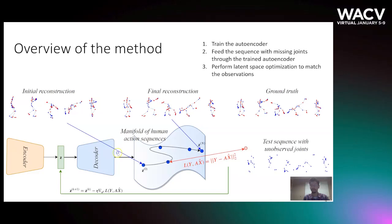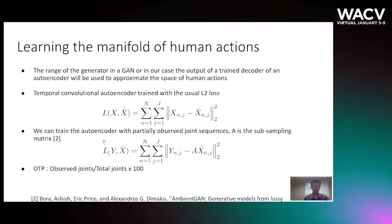How do we train the autoencoder? If we have a training set with fully clean data where all joints are visible, then we can train it with the usual L2 loss. However, we are interested in a more difficult setting where the training set also has sequences with missing joints. In that case, we use a modified loss function, where the additional term A is the subsampling matrix which shows which joints have been missing, and Y refers to the training sequences where some of the joints are missing.